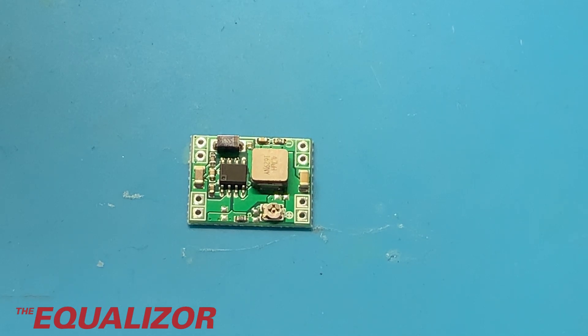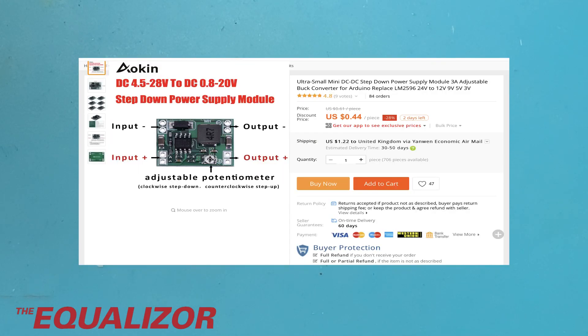Today we're having a look at this. It's a DC to DC buck converter from AliExpress and this converts a higher voltage to a lower voltage.